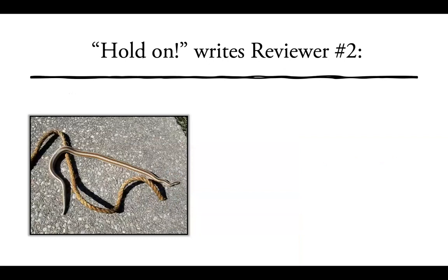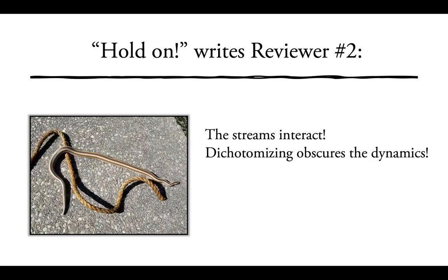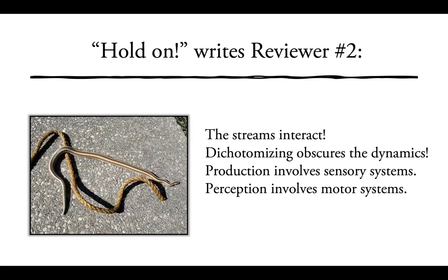There have been objections to the what-versus-how dichotomy, both in vision and in auditory/speech research. People point out that the streams interact — even though we might reach for and grasp two objects in the same way, our conceptual system drives whether we want to interact with them in the first place. Also, dichotomizing obscures the dynamics: production involves sensory systems, and perception also seems to involve motor systems. In general, some argue it's just one big dynamic network.